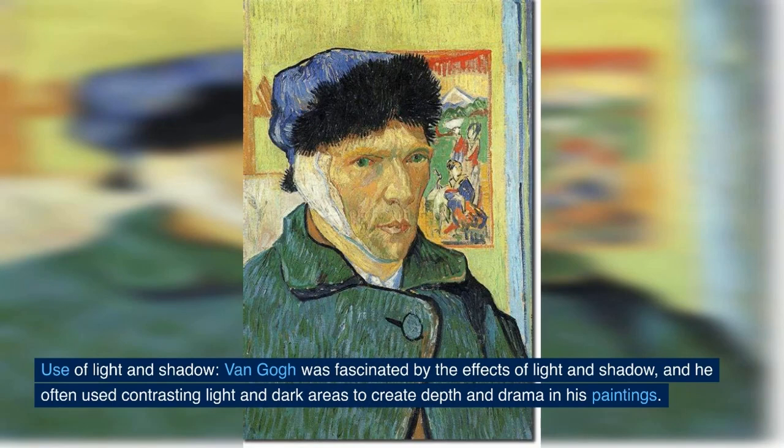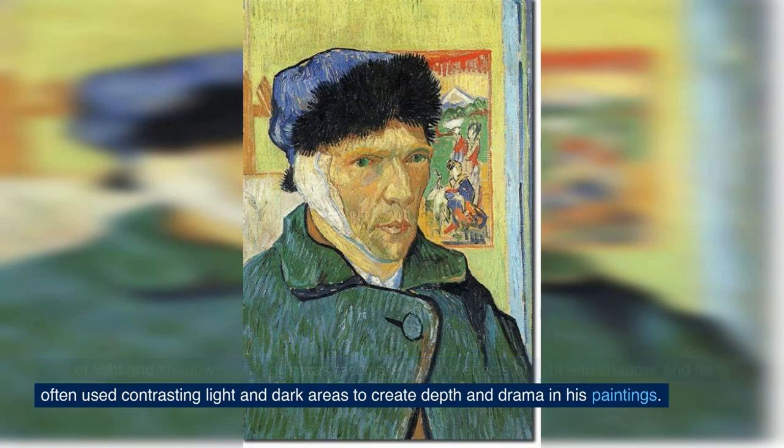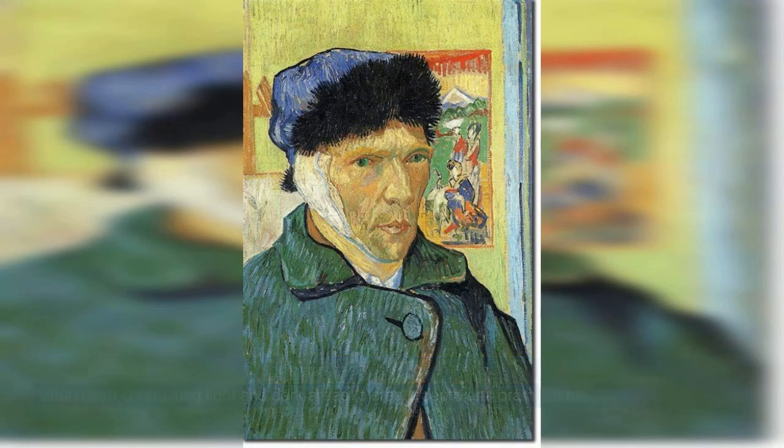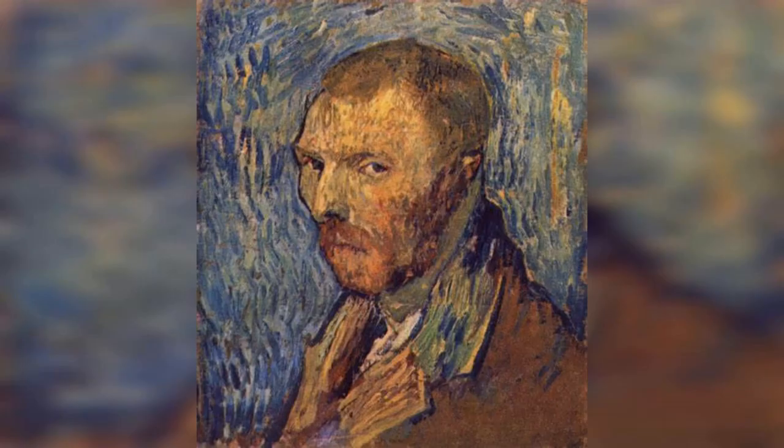Van Gogh was fascinated by the effects of light and shadow, and he often used contrasting light and dark areas to create depth and drama in his paintings.